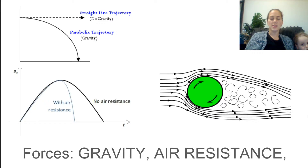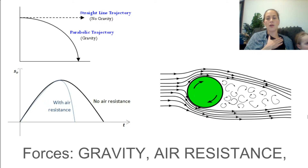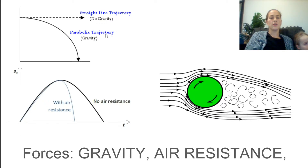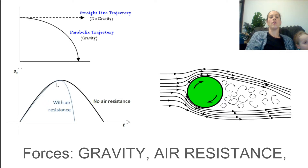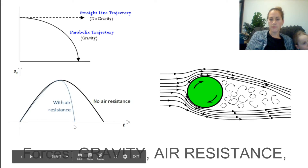Different forces act upon your projectile. Gravity brings the projectile down to earth. Air resistance makes it difficult for the projectile to follow its normal path, bringing it down to earth quicker.